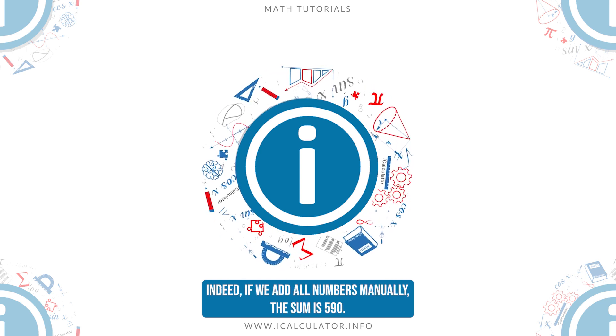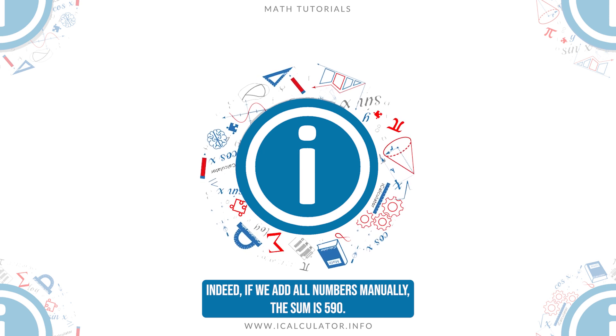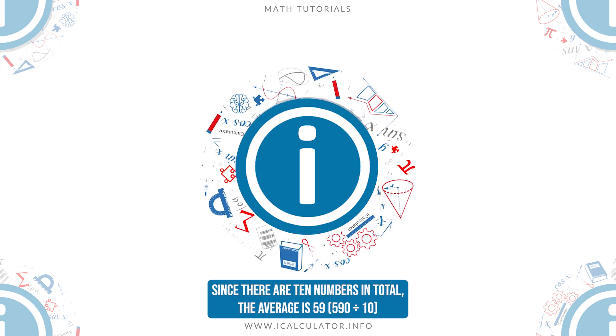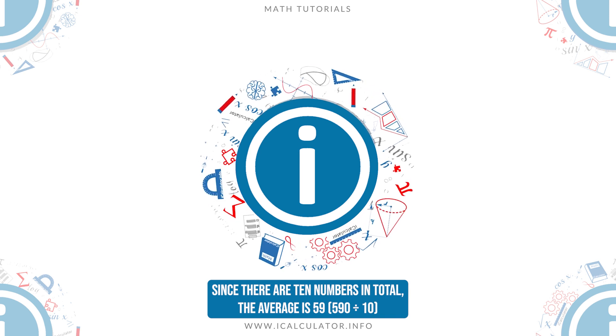Indeed, if we add all numbers manually, the sum is 590. Since there are 10 numbers in total, the average is 59, 590 divided by 10.